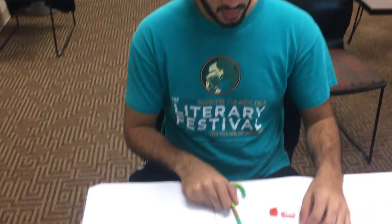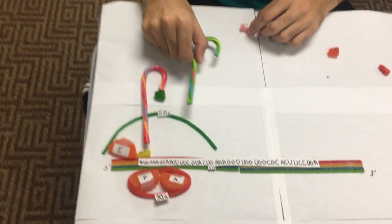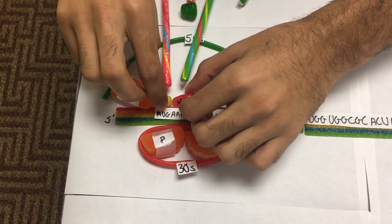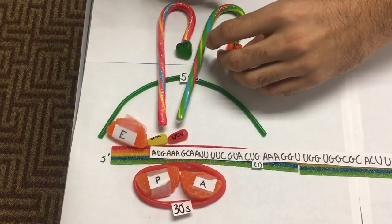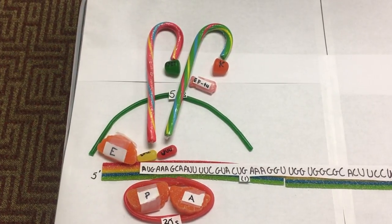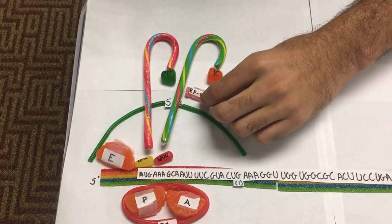The next step in translation after initiation is elongation. That begins when EFTU, bound to GTP, brings in the second aminoacyl tRNA. Here, the second aminoacyl brings in lysine. So once GTP is hydrolyzed, EFTU and the GTP complex leaves.